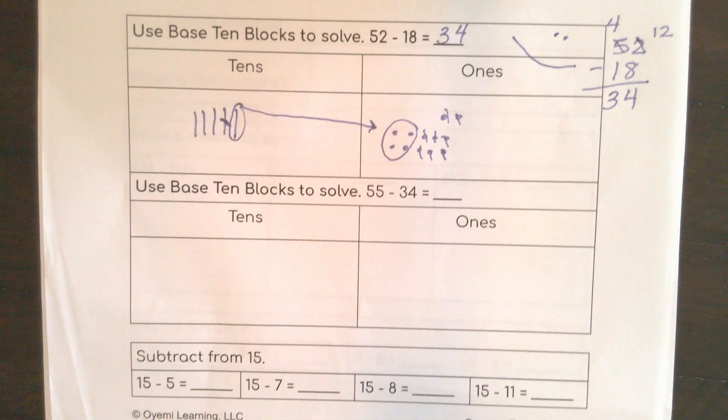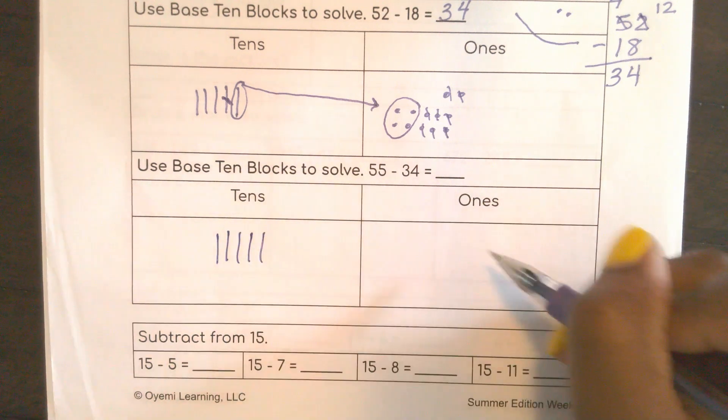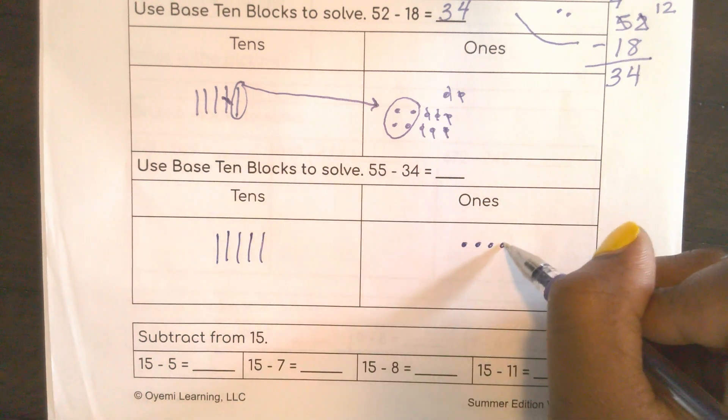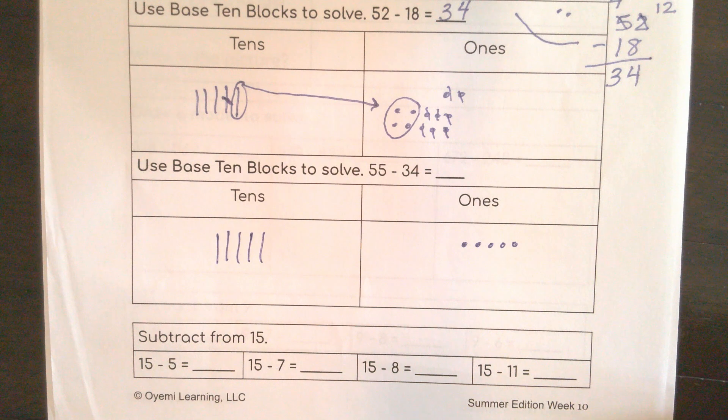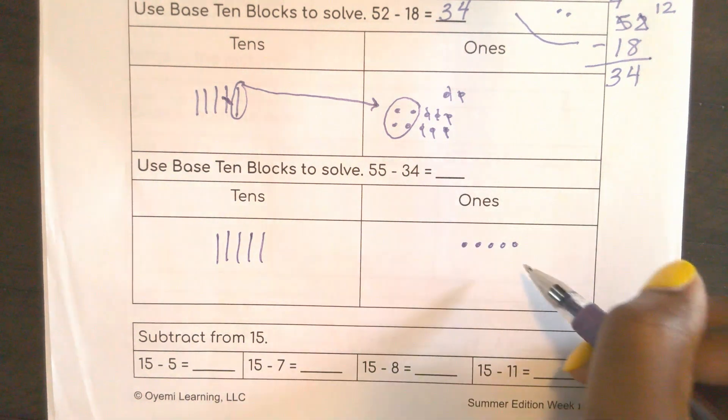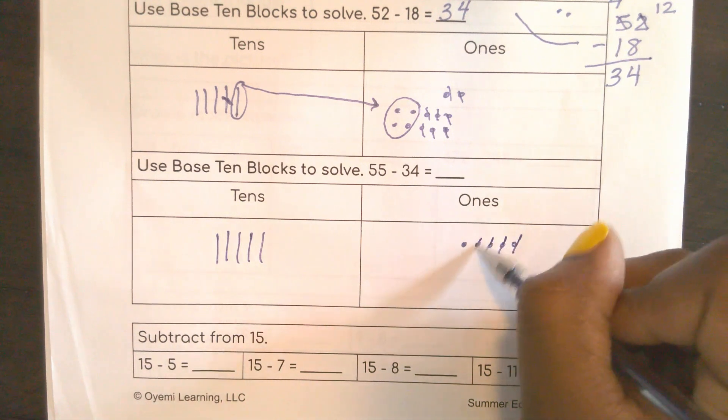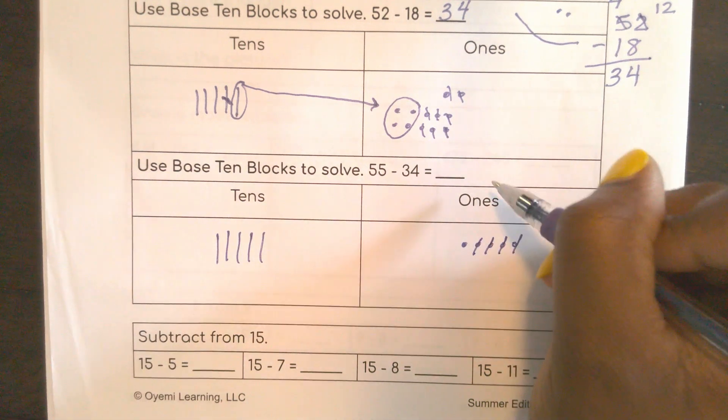All right, let's look at the base 10 blocks down here. I'm going to go ahead and enter 55. 10, 20, 30, 40, 50. 1, 2, 3, 4, 5. This one's simpler. I can take 4 ones away from 5 ones. 1, 2, 3, 4. How many do I have left? Just one one.